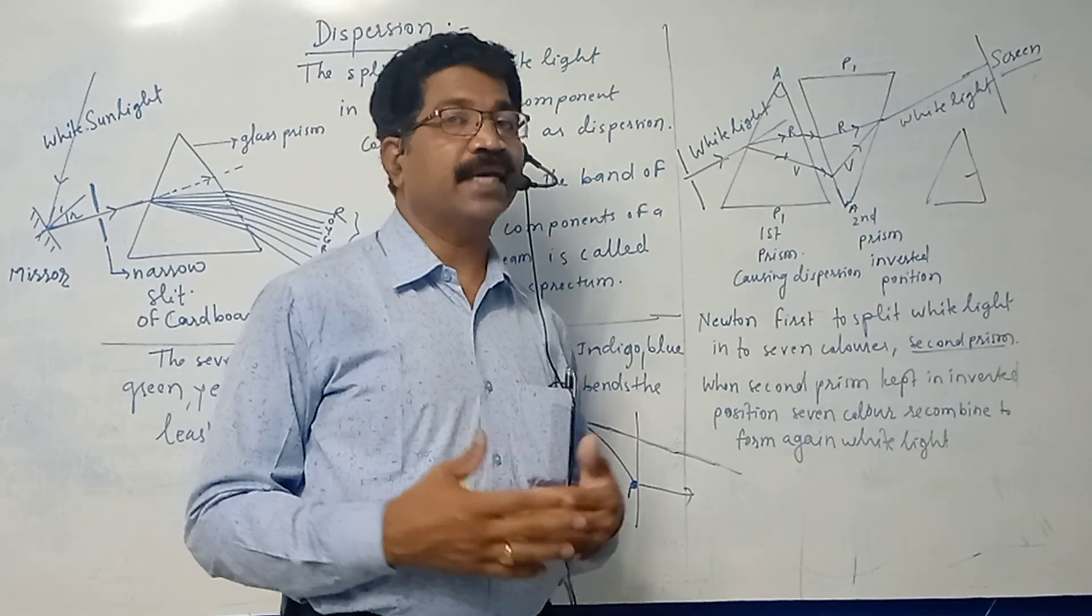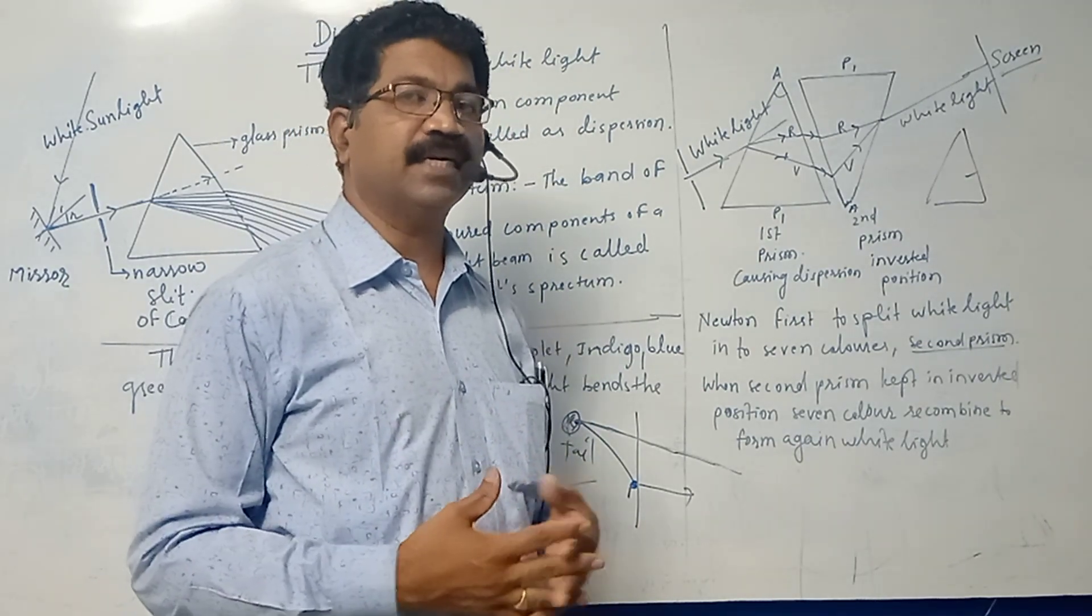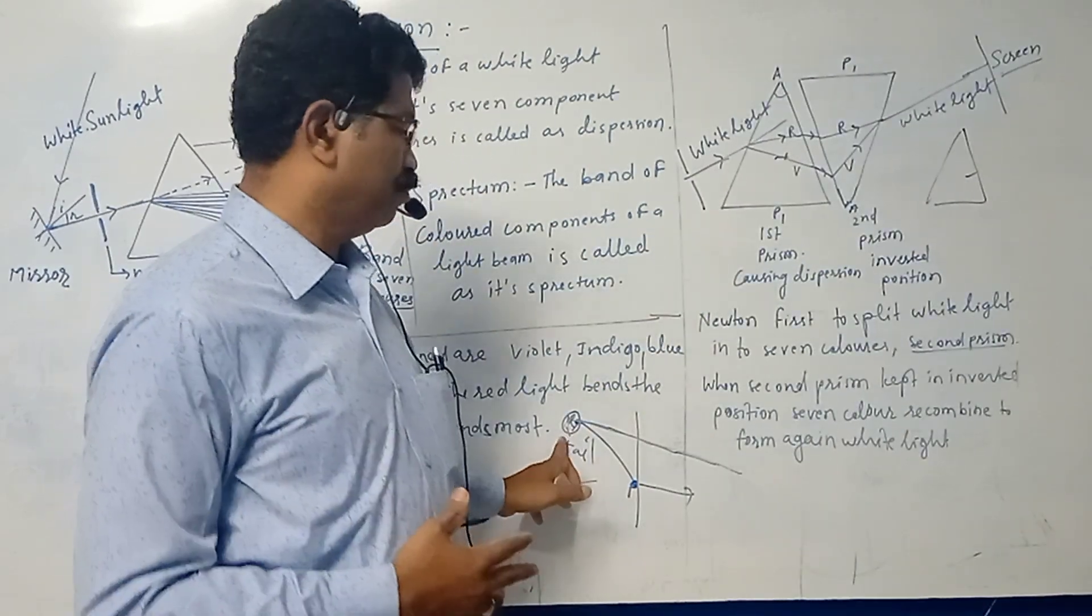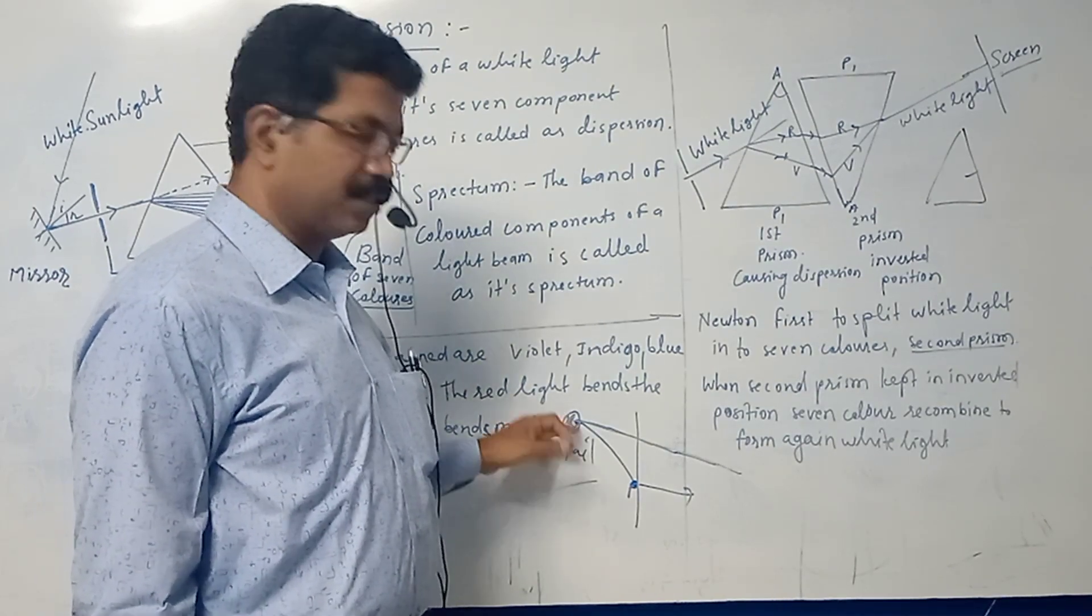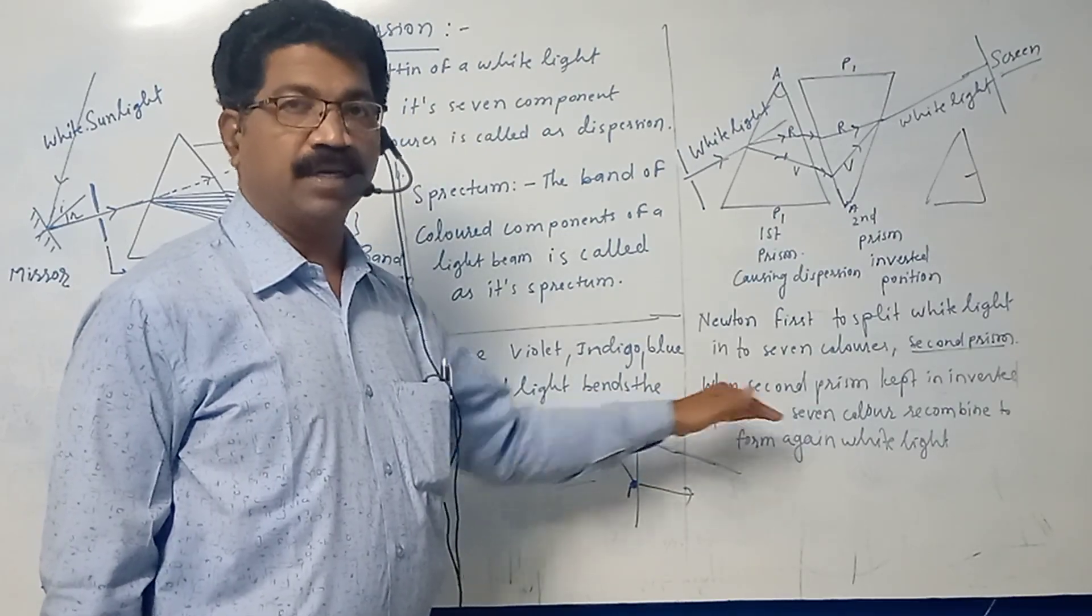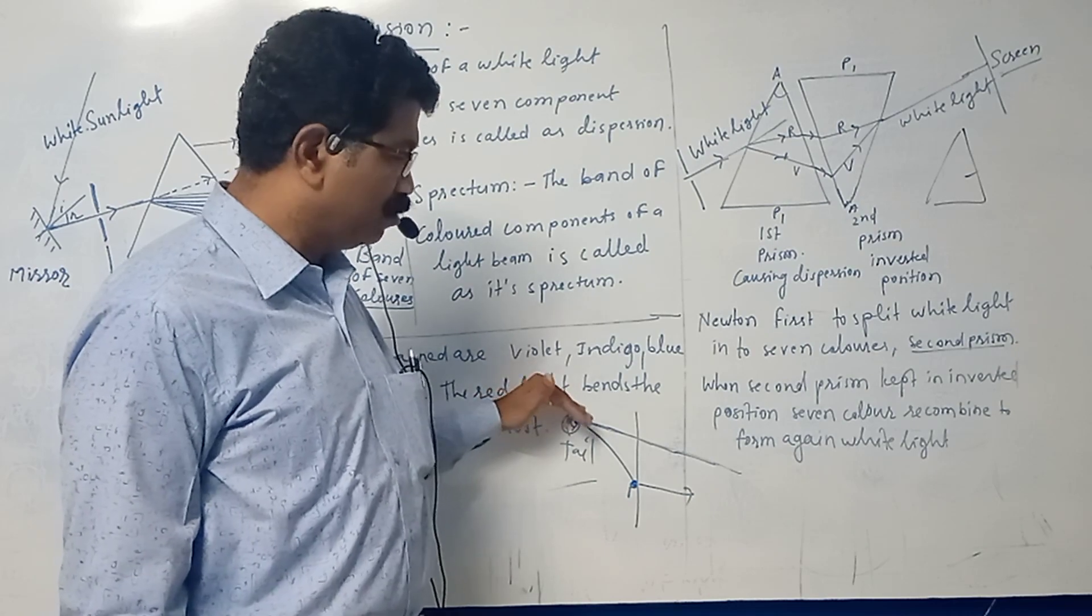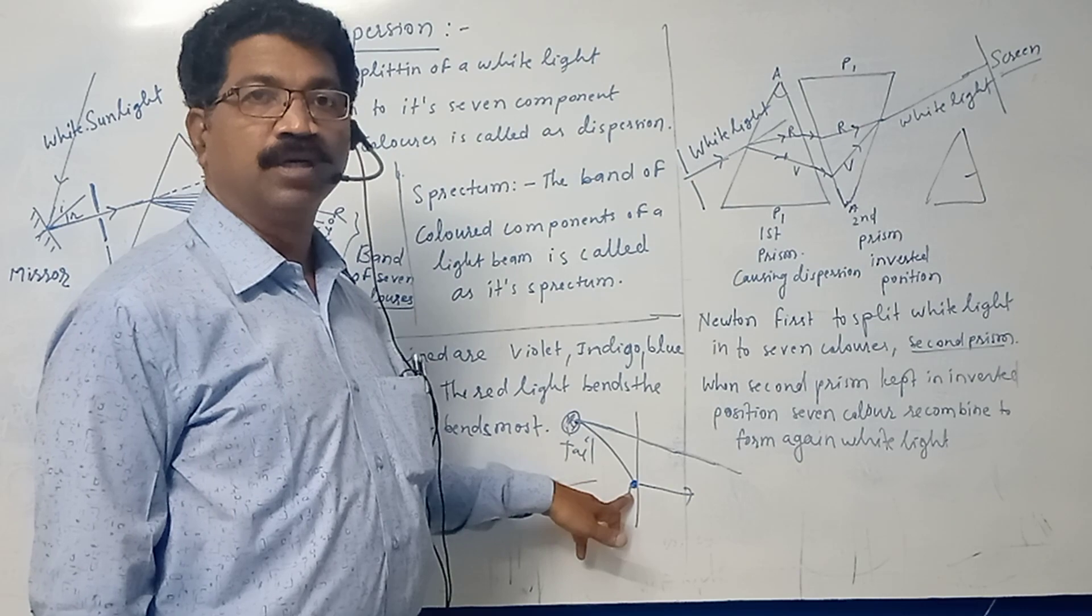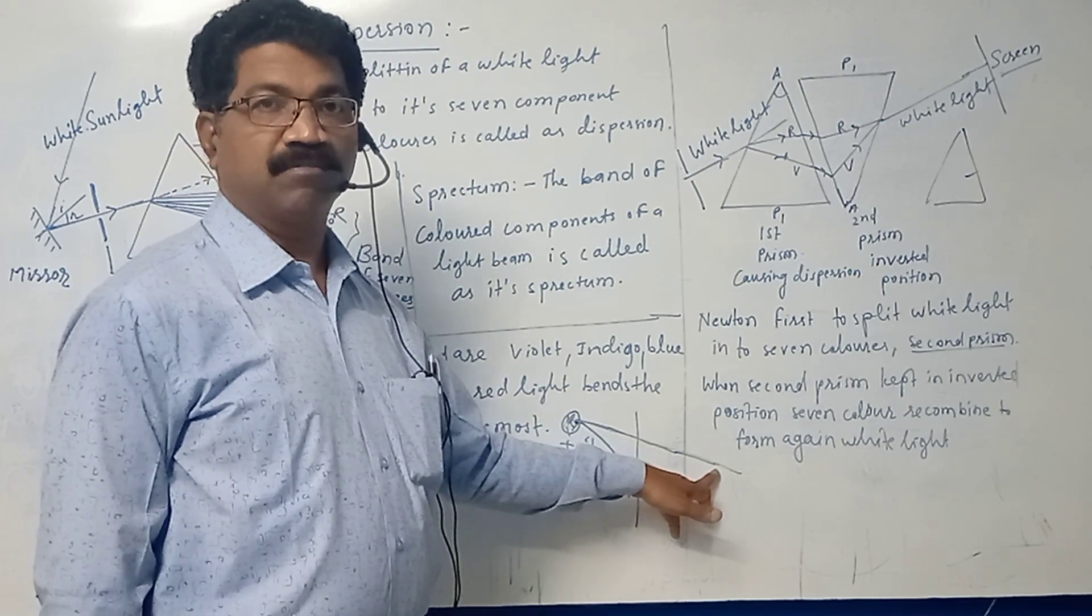Why are danger signals red in color? Because red is dispersed least. So there is a tail light - when the tail light is red in color, it will be dispersed less so that it will travel more distance to the rear vehicle. But if it were violet, then it will go on dispersing into the air and will end on the road and will not be seen by the distant vehicle.